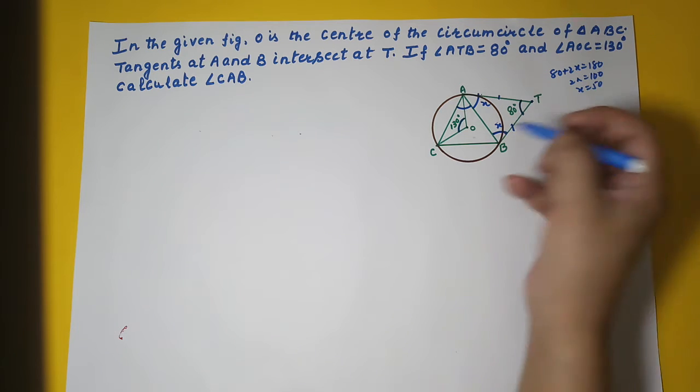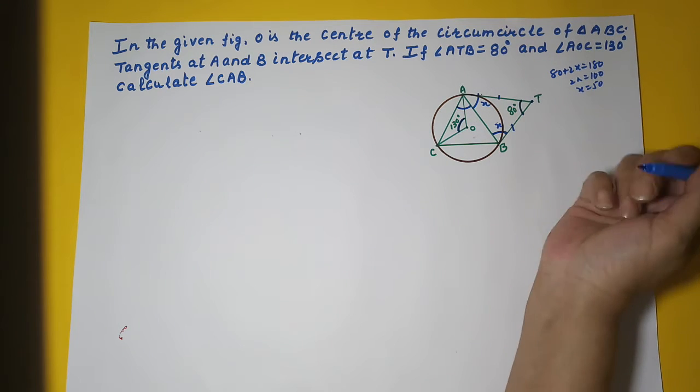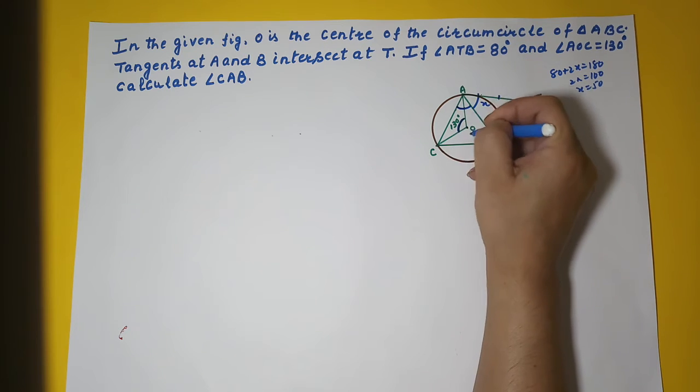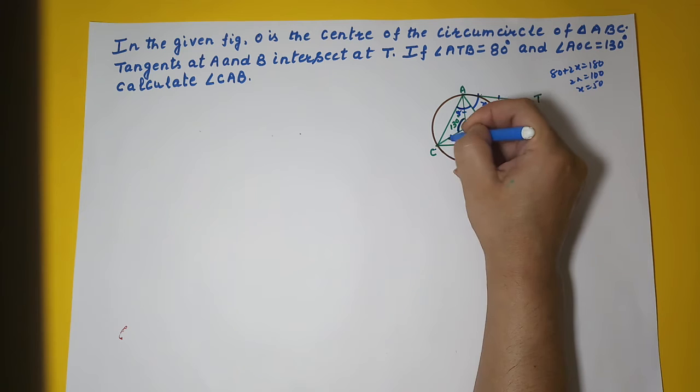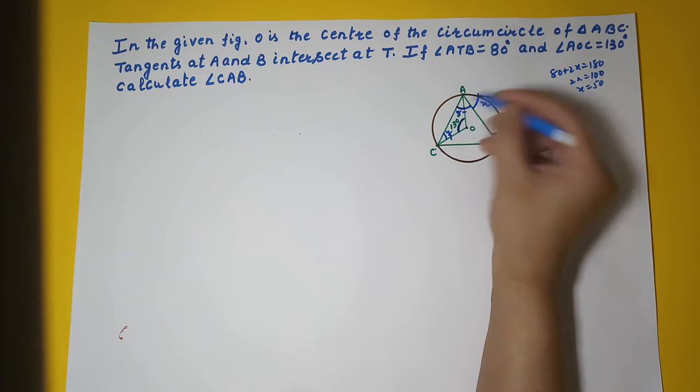Now if we look at this triangle AOC, this is 130. This OA equal to OC, radii of the same circle. So this angle will be Y, this will also be Y, they will be same.